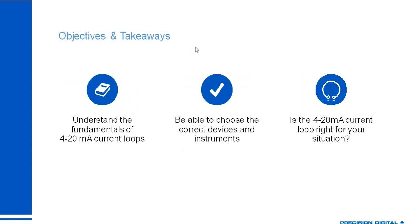We're really hoping that you leave here with an understanding of three things. The first is the fundamentals of the 4-20mA current loop — what is a current loop, why is it 4-20mA, and what do you need to know to work with it? Second, we want you to be able to choose the correct devices and instruments that go into a current loop. And third, being able to spot if a 4-20mA loop is the right choice for your process need — it's an industrial standard that's extremely common, but it's not great for every application.